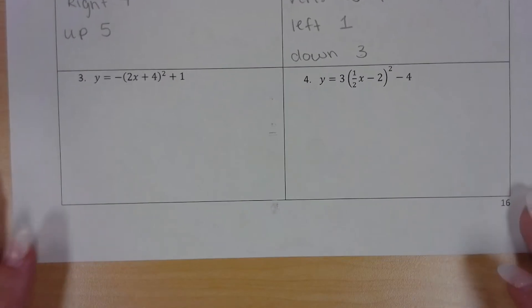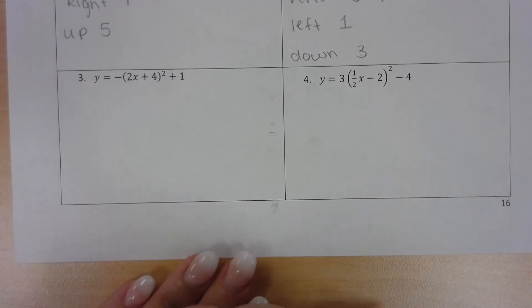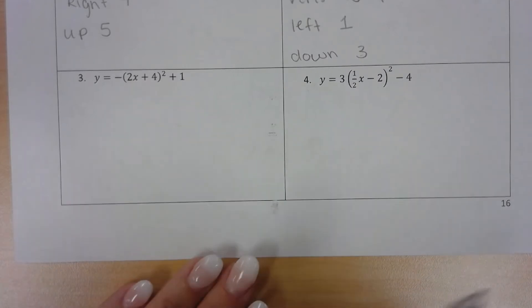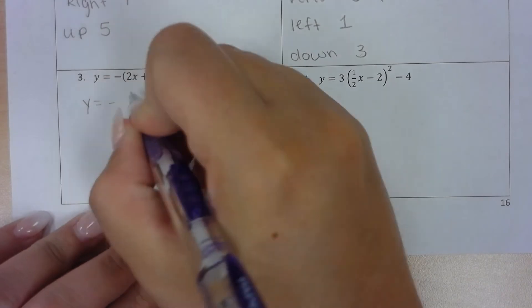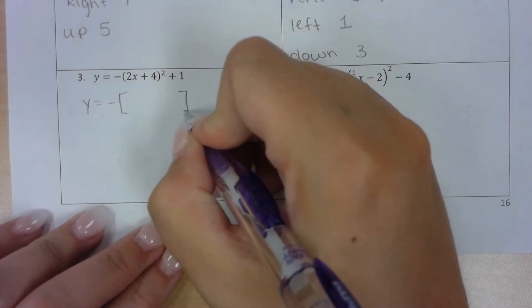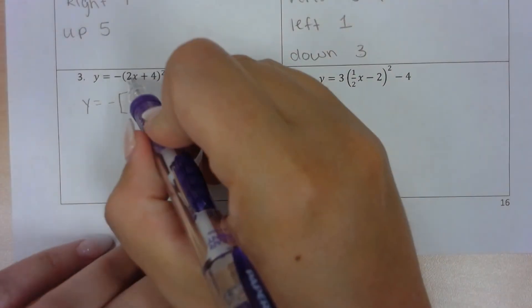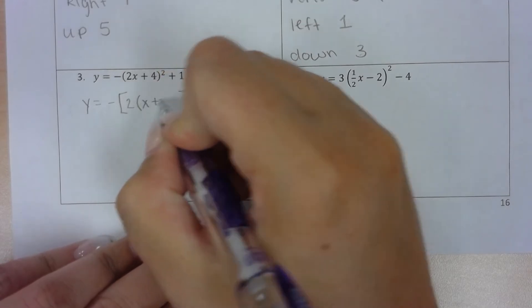Now remember from algebra 2, whenever we have numbers inside with our x, it has to be factored. So I can't start figuring out what my expansions and compressions, my shifts are, until I factor out this 2 because there can be no number next to the x. So what I mean by that is if I factor out, so I've got negative, I'm going to make these parentheses into brackets, and I'm going to factor out this 2. So this 2 is going to be here, and it's going to turn into x plus 2.